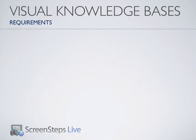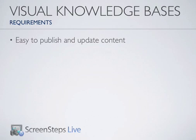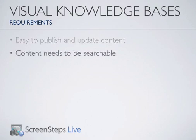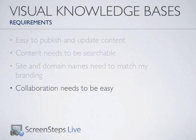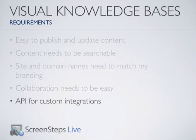I have several requirements for my site. Number one, I need it to be easy to publish and update content. Two, I need my content to be searchable so my customers can find what they need. Three, I need to be able to make my customers feel that they have never left my company's site when they come to my knowledge base — the site template and domain name should all be customizable. Four, I need a simple way of getting my team to work together on creating the content for this site. And finally, five, I want an API so that if I decide to integrate this content with other parts of my site or other web apps later, I have that flexibility.